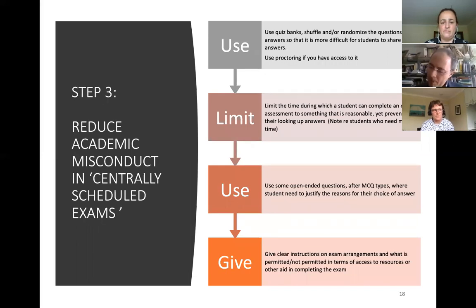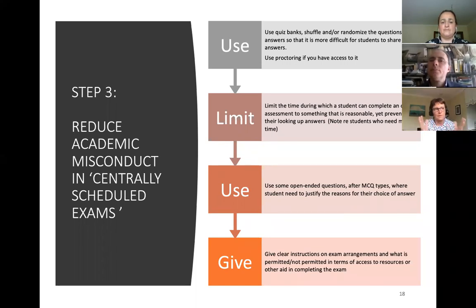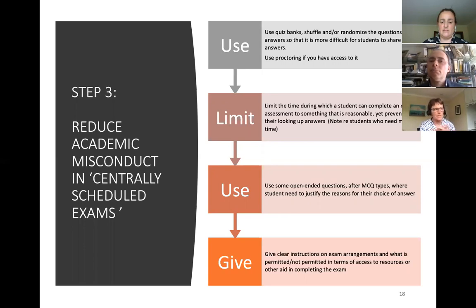Encourage originality, self-reflection, and individual responses where possible. Ask students to relate the topic data to their own experience — making it unique to them. Where you can, give some choice of topics in the assignment, so not all students are doing the same topic. Detect contract cheating through plagiarism tools or by checking for essay mill patterns. The third step is trying to really stop it happening: if you're using quiz banks, shuffle or randomize questions so it's harder for students to detect patterns.